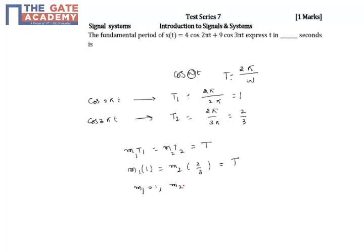If I put m1 equal to 2 and m2 equal to 3, then what will happen: this will become 2×1, this equals 3×(2/3), this equals T. So for small values of integers, this equation holds good. That means its fundamental period is 2 seconds.